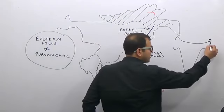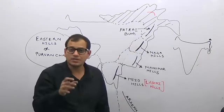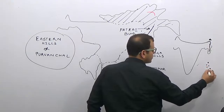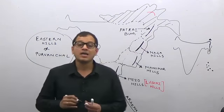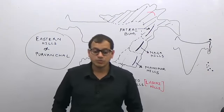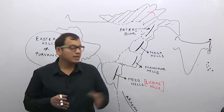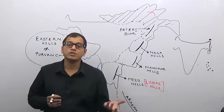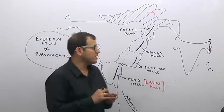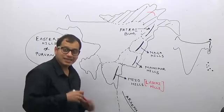After Mizoram, they submerge into the Bay of Bengal region, and afterwards they project upwards as peaks. What we call them are the Andaman and Nicobar Islands. So the Andaman and Nicobar Islands are nothing but the sub-peaks of the submerged mountain system of the Himalayan ranges.